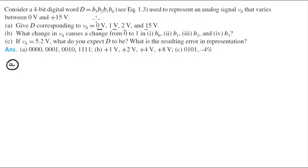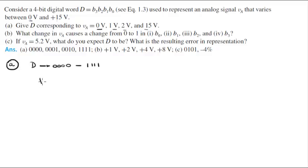Basically, they're telling you that the word D goes from 0,0,0,0 to 1,1,1,1 in binary. From 0000 to 1111 you get 16 values including 0. These 16 values are the same 16 values that you get from 0 to 15. There are 16 values because you have to include the 0, and you just have to convert to binary. So you get the voltage on one side and the word on the other.